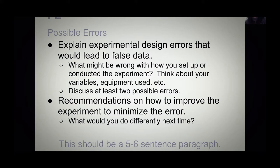The P, the second paragraph of your conclusion, is for possible errors. Here you're going to explain experimental design errors that might lead to false data. Think about all the things that could have gone wrong with how you set up or conducted the experiment. Think about your variables — did you only change one variable at a time and keep the rest constant? Did you use your equipment correctly? Did you use the right equipment and the right measurements? When talking about what might have gone wrong, don't say 'human error,' because that could occur with any lab. Think specifically about the setup: did you have your procedures correct, were you missing a step, did you include everything that needed to be done?